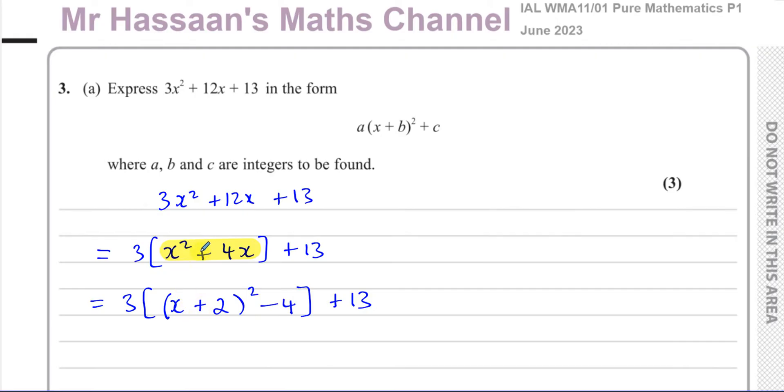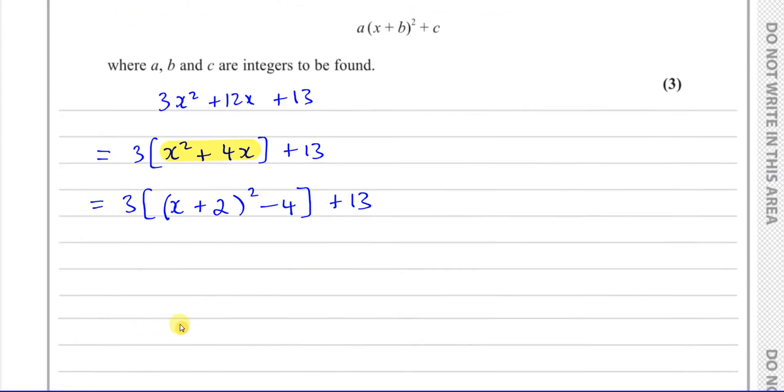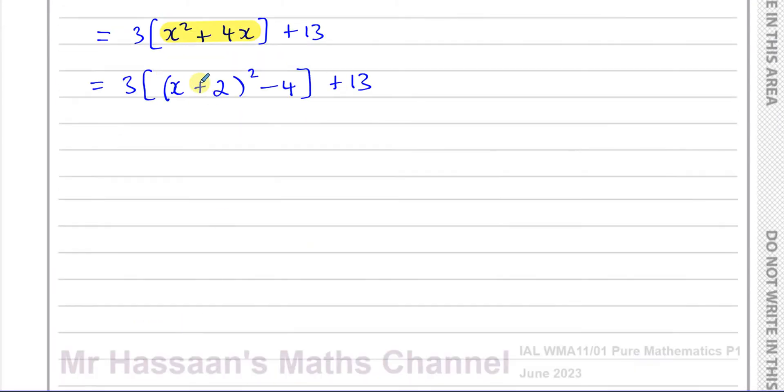Now to finish off, we can basically simply just distribute this 3 inside this bracket. So 3(x + 2)², and 3 times -4, which is -12. And then you've got your plus 13, and now we can combine these two. So 3(x + 2)² + 1. So that is the expression in its completed square form.